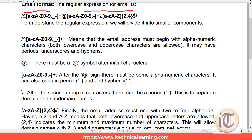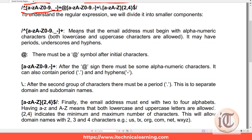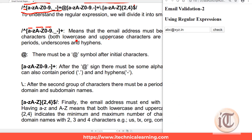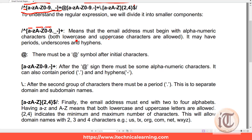Now we divide it into smaller components. The first part means that our email address must begin with alphanumeric characters — both lowercase and uppercase. So we have said this part will contain either small a-to-z, capital A-to-Z, or digits 0-9, and it may also contain dot, underscore, and hyphen. This covers everything before the at-sign — for example abc, abc123, or abc_c.